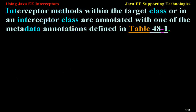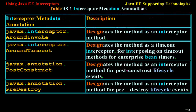Interceptor methods within the target class or in an interceptor class are annotated with one of the metadata annotations defined in Table 48-1. The annotation javax.interceptor.AroundInvoke designates the method as an interceptor method. The annotation javax.interceptor.AroundTimeout designates the method as a timeout interceptor, for interposing on timeout methods for Enterprise Bean Timers.